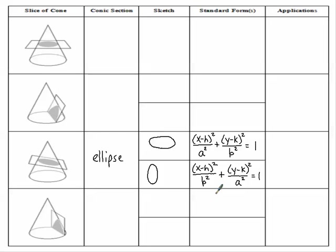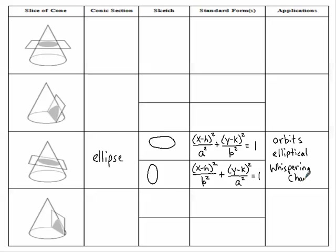Applications of ellipses: you might think of orbits — the planets orbit the sun in an elliptical pattern. You might think of an elliptical machine in the gym. There's also something called a whispering chamber, which you may have learned about in social science class. We'll talk about whispering galleries on the next page as well.